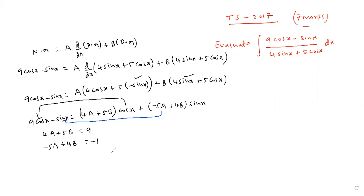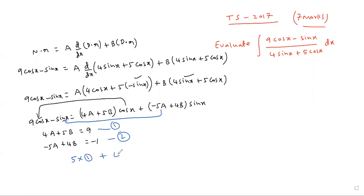Now solve these two equations to get the values of a and b. You can follow any standard procedure. Multiply equation 1 by 5 and equation 2 by 4, then add to cancel a and solve for b.